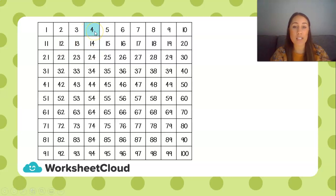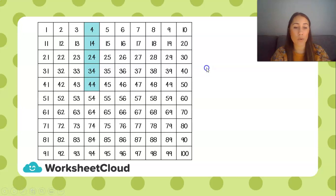If I count in tens, I add 10 every time. So, 4 plus 10 is 14, and then 24. I hope you've started to see the pattern that's starting to form: 34, 44, 54, 64, 74, 84, 94.